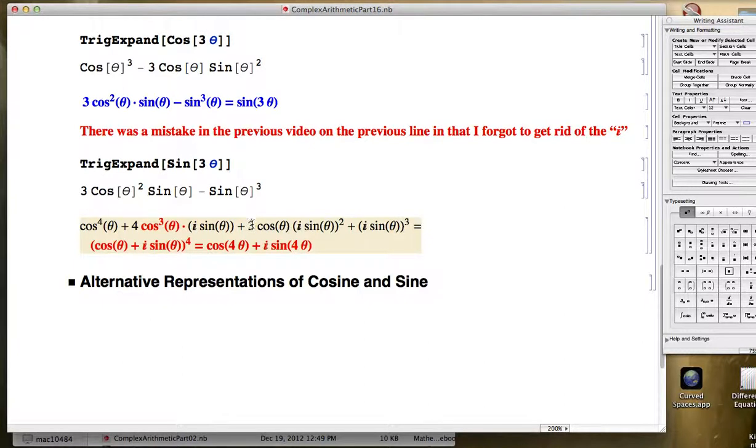Then you're going to have, in the next term, you're going to have a six times the first term, the cosine theta, squared. And the second term, i sine theta, is also going to be squared, so I can leave that the same right here. Next, you're going to get the four again,